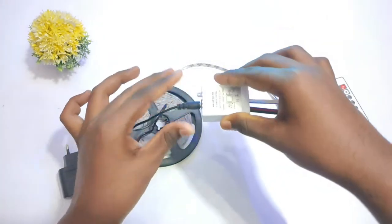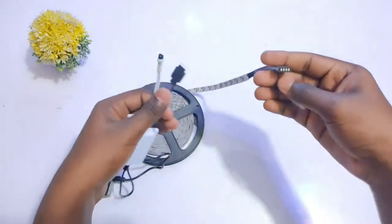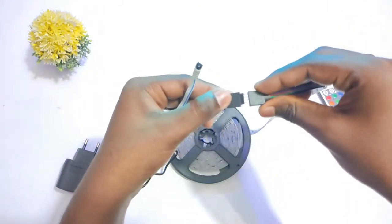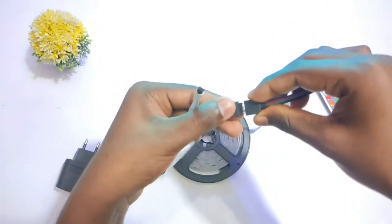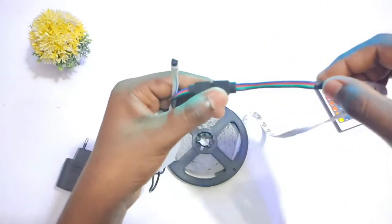First we need to connect the 12 volts DC pin to the controller and connect the male pins to female pins. Keep note that the colors of the wire should be parallel.